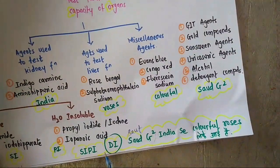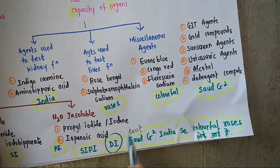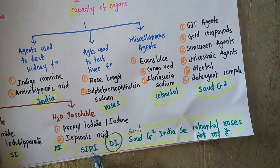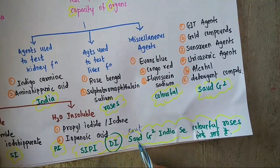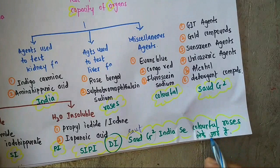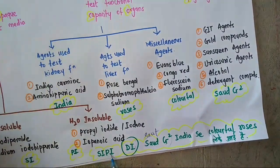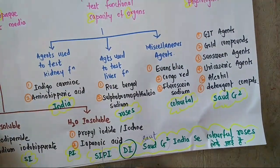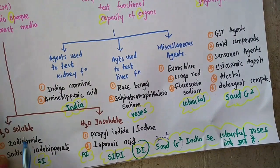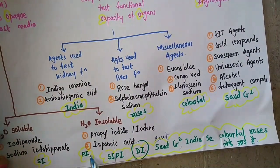Now let us see the distribution. In the mnemonic, 'di' is for diagnostic agent. 'Sippi' — SI is water soluble and P is water insoluble. 'Saudji' is for MP, i.e., Madhya Pradesh — meaning compounds modifying physiological functions.